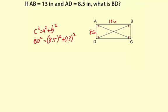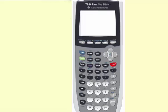And I wouldn't expect you to do this by hand, so I'm going to use a calculator here. So BD squared is going to be 8.5 squared plus 13 squared. 241.25.